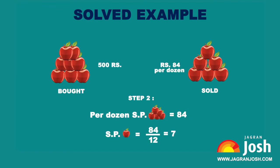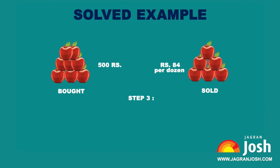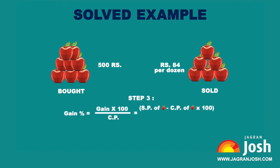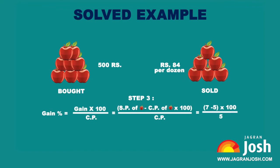Step 3: Gain percentage = (Gain / CP) × 100 = (SP of one apple − CP of one apple) / CP × 100 = (7 − 5) / 5 × 100 = 2 / 5 × 100 = 40%. Therefore, there is a profit of 40% in the whole selling process.